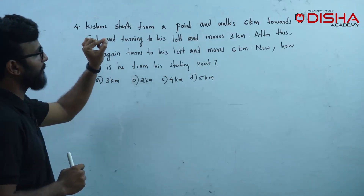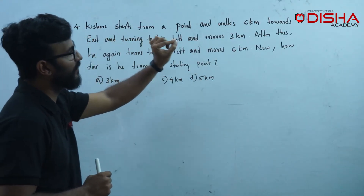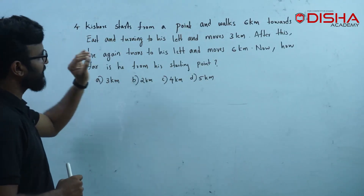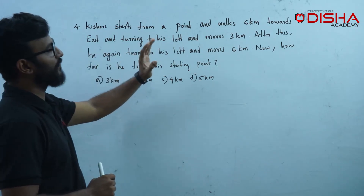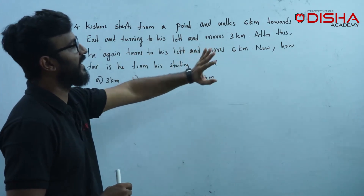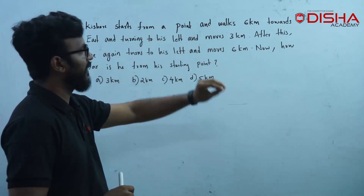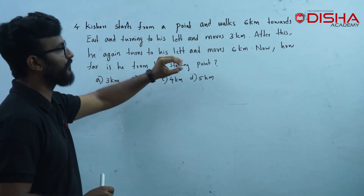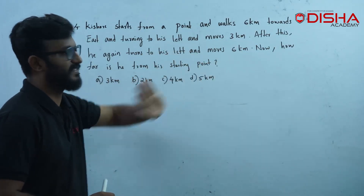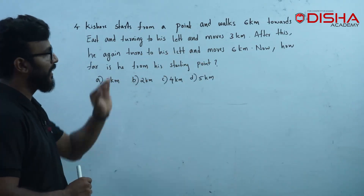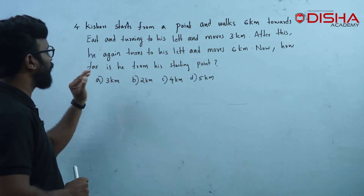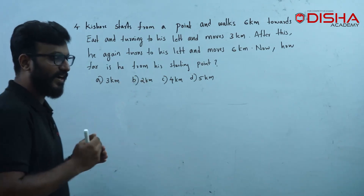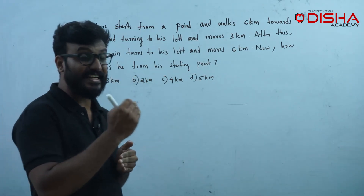Kishore starts from a point and walks 6 km towards East. Turning to his left, he moves 3 km. After this, he again turns to his left and moves 6 km. Now, how far is he from his starting point? I will ask the question about distance.